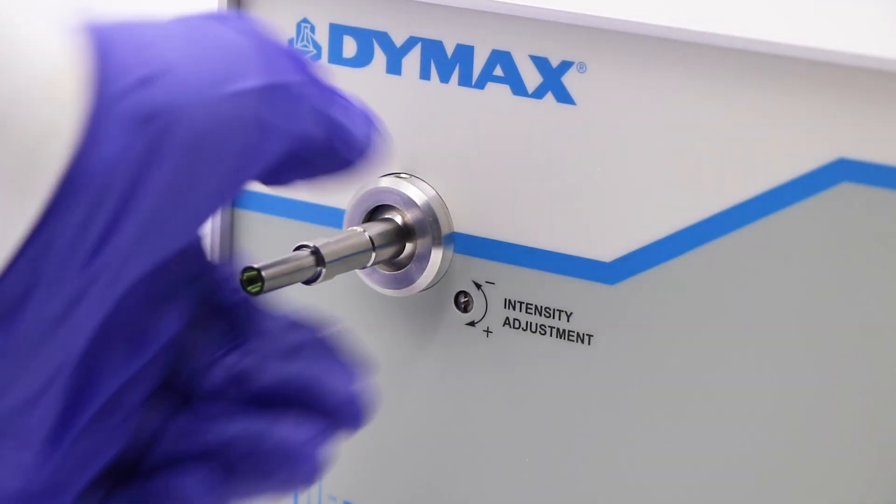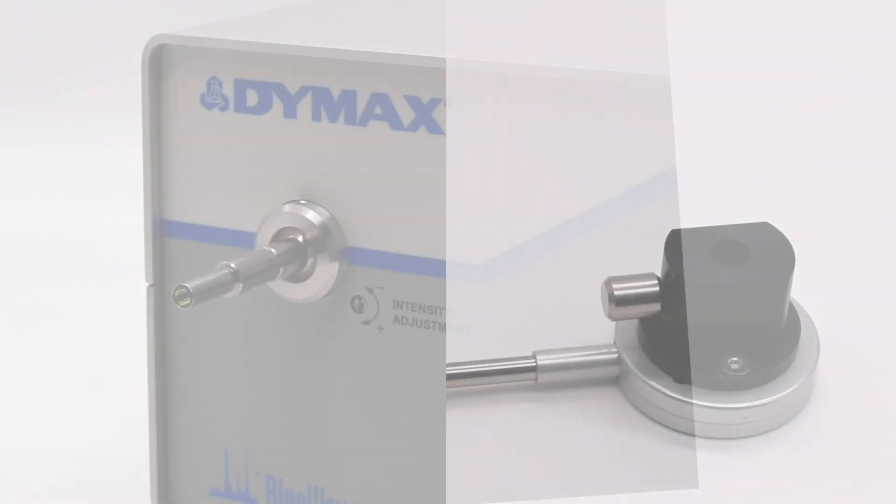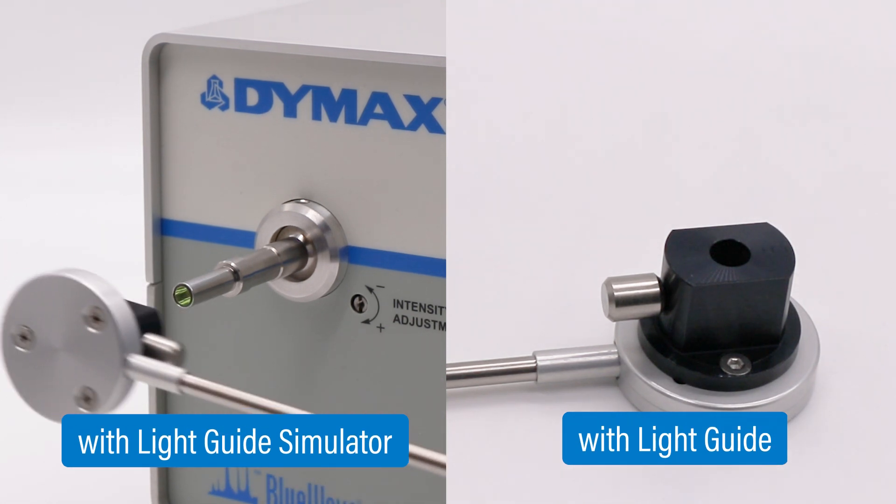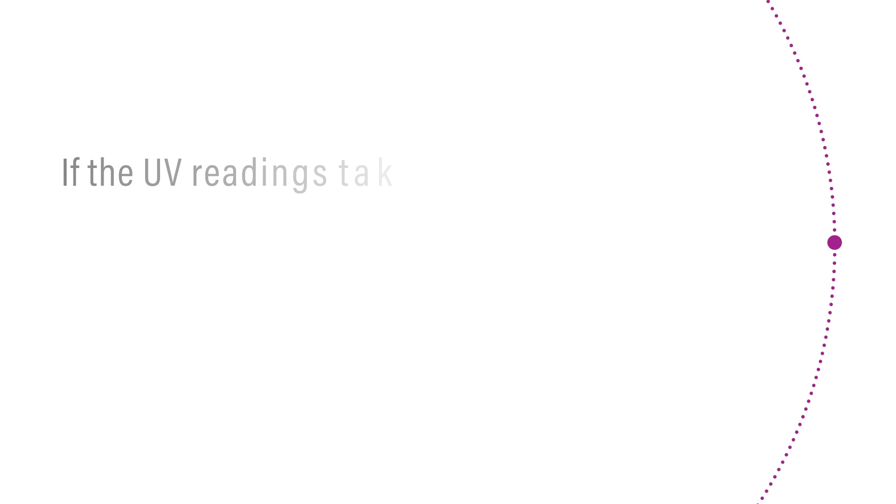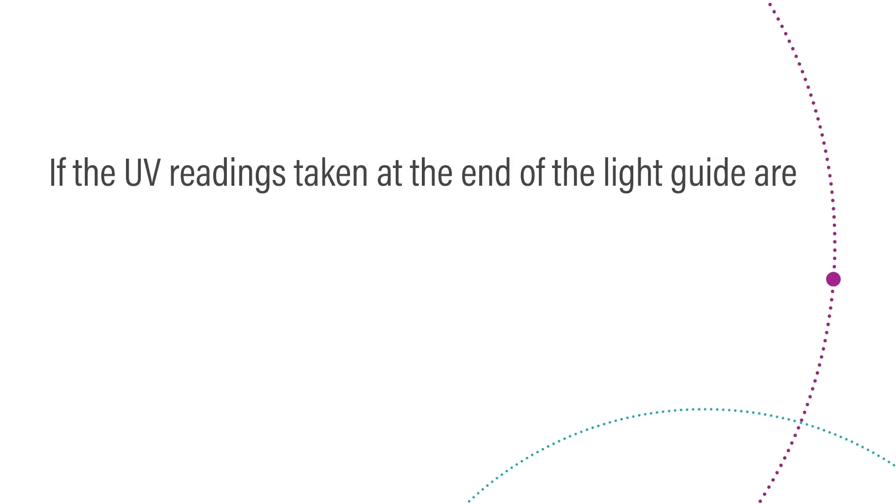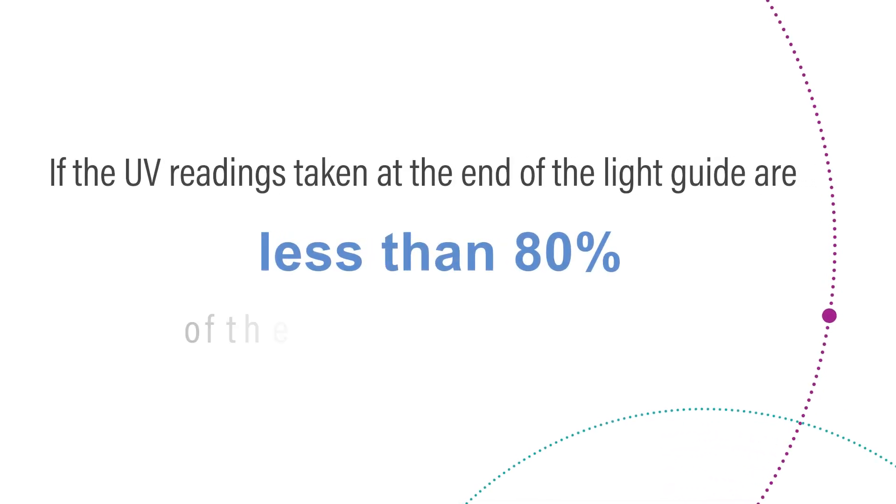The best way to determine light guide degradation is by comparing UV readings taken with a light guide simulator with UV readings taken at the end of the light guide. If the UV readings at the end of the light guide are less than 80% of the values from the simulator, the light guide may require cleaning.